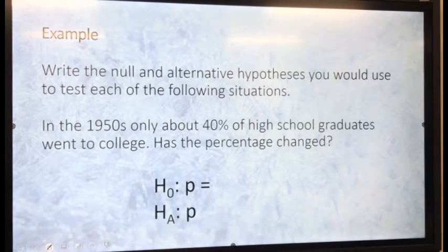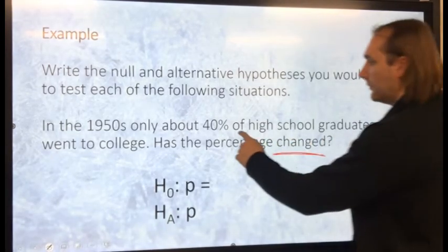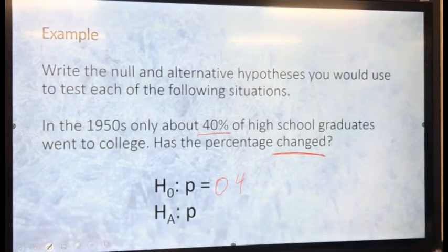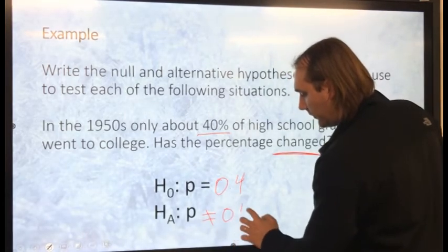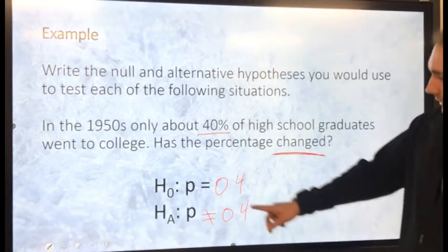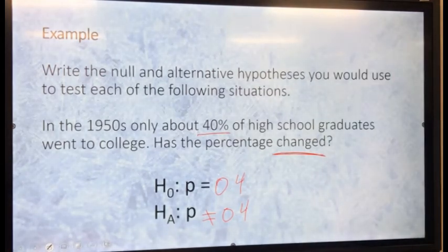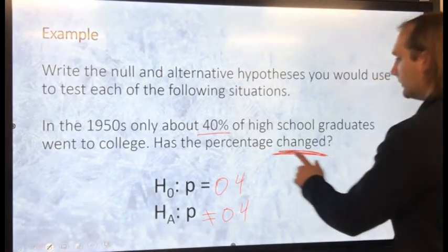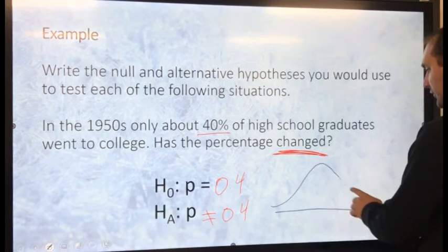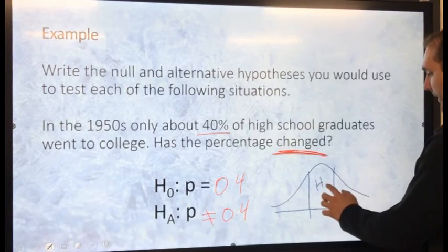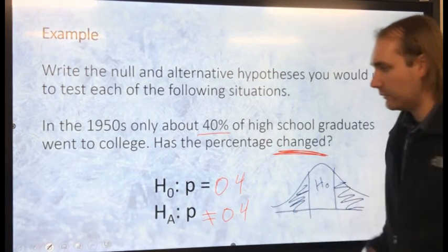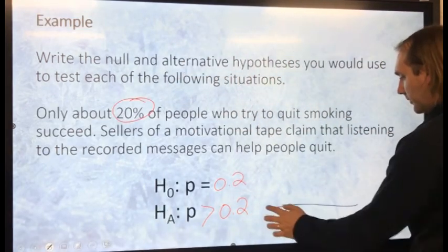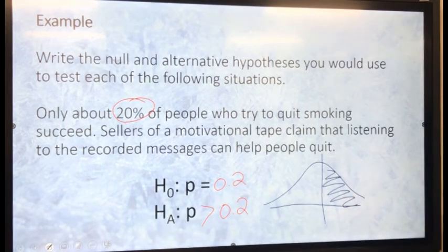Last example: in the 1950s, only about 40% of high school graduates went to college. Has the percentage changed? So my null is P equals 0.4. Has it changed means it is anything other than 0.4, so a change would be P not equal to 0.4. That represents a change from our null of 0.4. This is when you would use 'not equal' — when you're talking about a change. With 'not equal to,' this is actually an example of a two-sided alternative: if I reject the null, I want my alternative to be anything other than that value. When you have something like 'greater than,' I have my normal curve and I'm looking for just one side — so that would be a one-sided alternative.